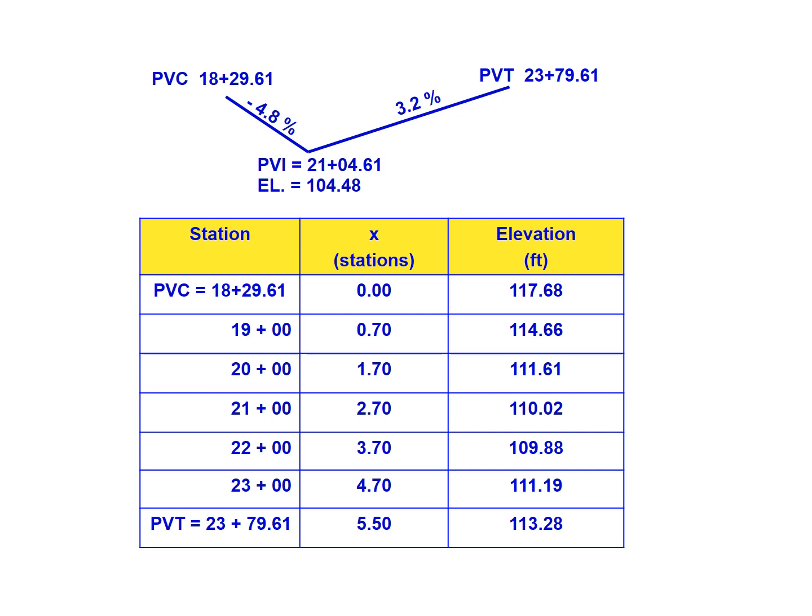X is just the distance along the curve — we subtract the PVC station from the station of interest. At the PVC, x is zero stations. At station 19, subtracting the PVC station gives 0.7 stations. At station 20, we get 1.7 stations, and so on. The final x at the PVT should equal the full length of the curve, 5.5 stations, which is exactly what we get.